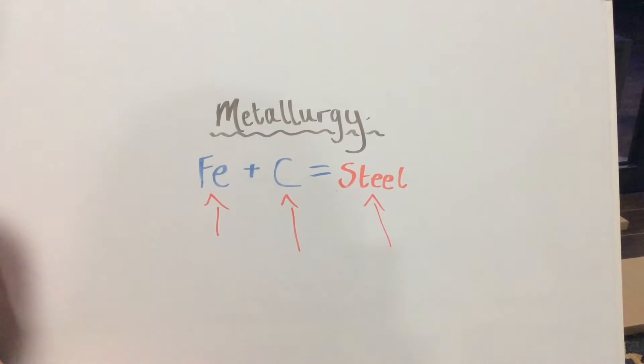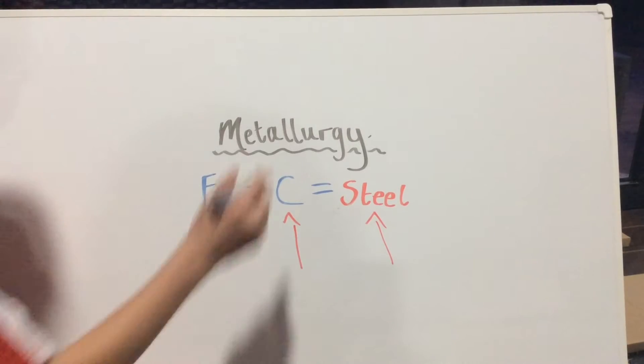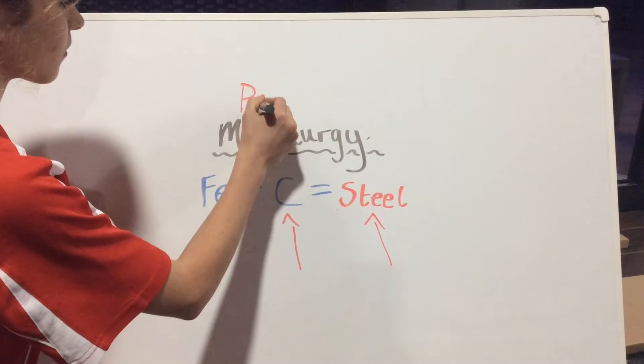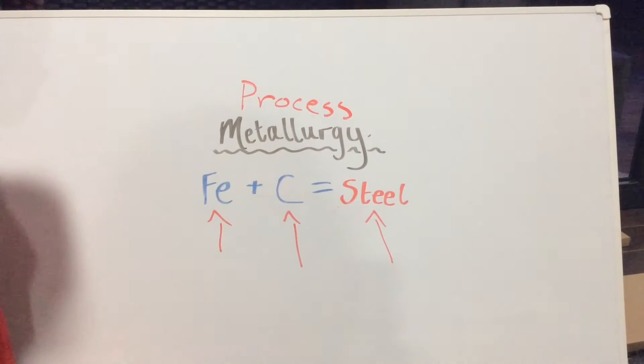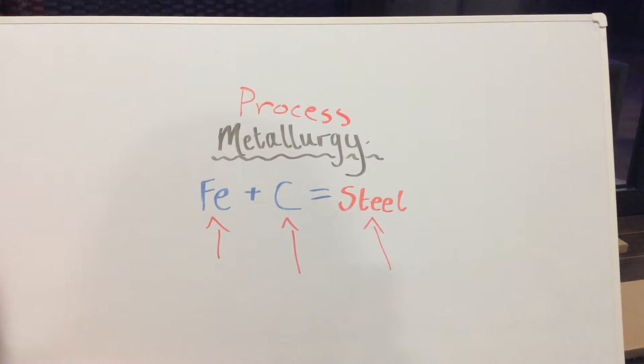However, producing alloys, also known as process metallurgy, is only one path of three. The other paths include physical metallurgy and chemical metallurgy.